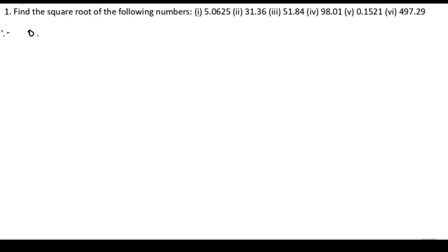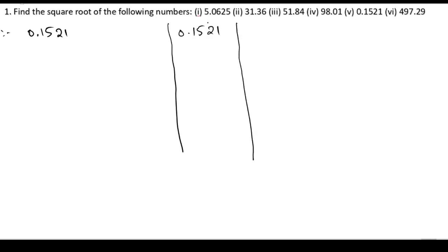Now the fifth bit is 0.1521. Let us take the number. We know 0 squared is 0. We bring this down — 0 plus 0 is 0. We bring 15 down. For 3 squared, the nearest number is 9, so 3 times 3 is 9.